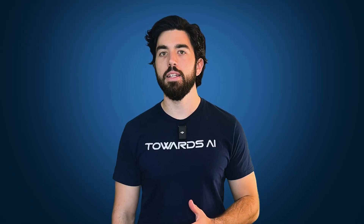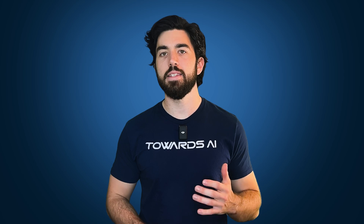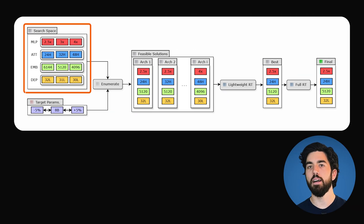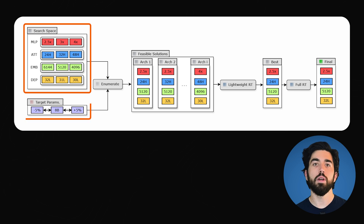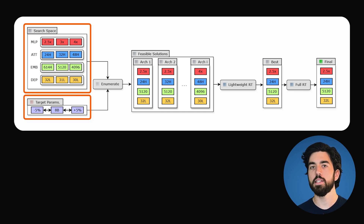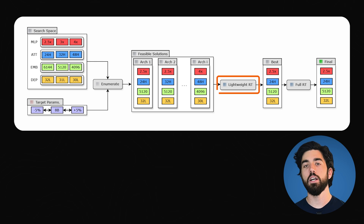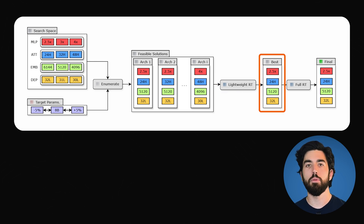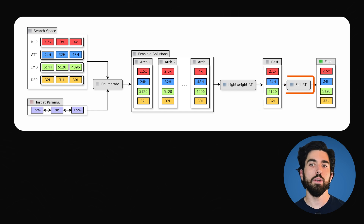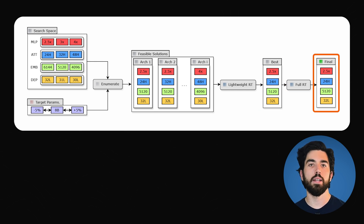Now that pruning is complete, how do we find the best design for a smaller model? They start by narrowing down possible model designs — the search space — with a parameter budget to keep the model size manageable. By focusing on common settings for neurons, attention heads, and embeddings, they come up with fewer than 20 possible designs. Quick training on a small dataset of around 1.2 billion tokens helps identify the best performing candidates, allowing the best one to be trained further.